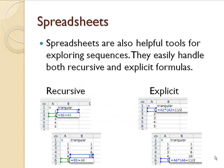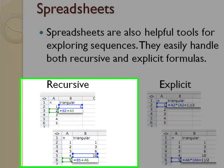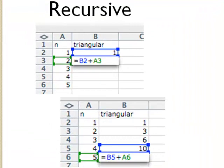Spreadsheets are also helpful tools for exploring sequences and they can easily handle recursive formulas or explicit formulas. Here, if we look at this on the left side, we've got triangular numbers and I've started by saying the first triangular number is 1. The second triangular number would be the previous triangular number plus 2, which is the information from cells B2 plus A3. By filling that down, we end up getting this information recursively.